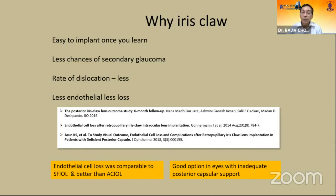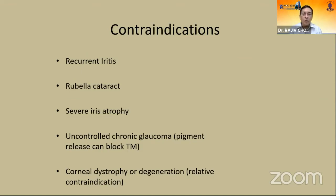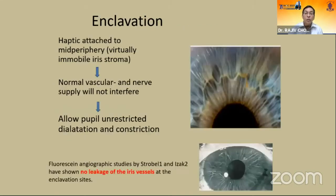What are the contraindications? Recurrent iritis — because it is claw to the iris — rubeosis iridis, severe iris atrophy when there is no iris support. Still, we can use it if there is some part of the iris available. Also contraindicated in uncontrolled chronic glaucoma and corneal dystrophy or degeneration.